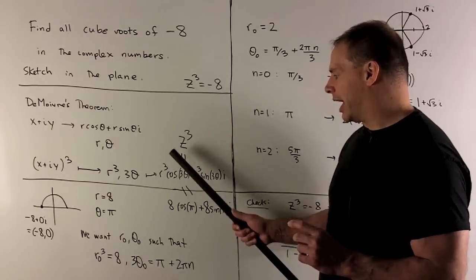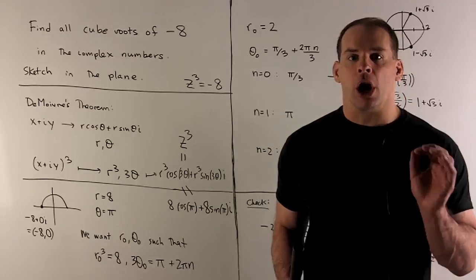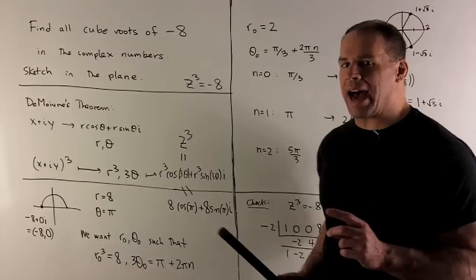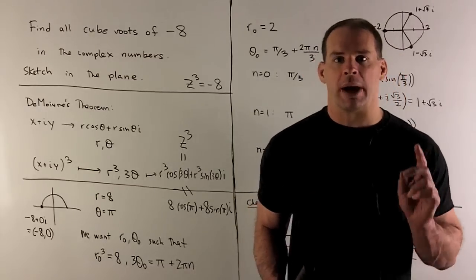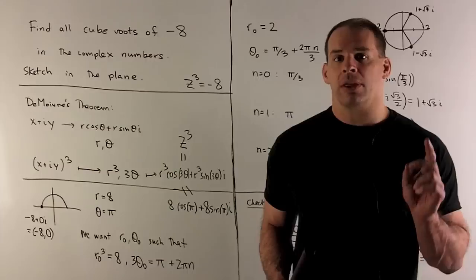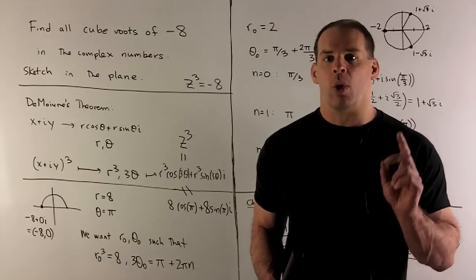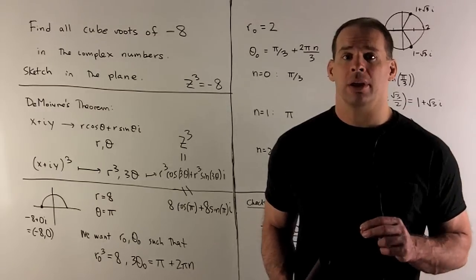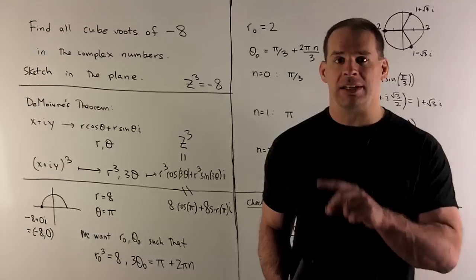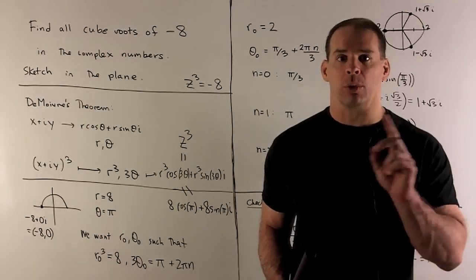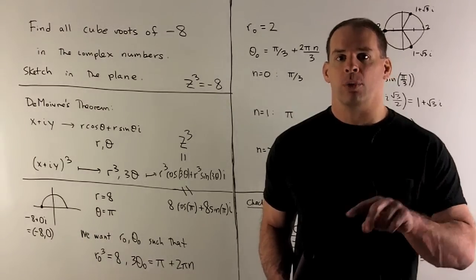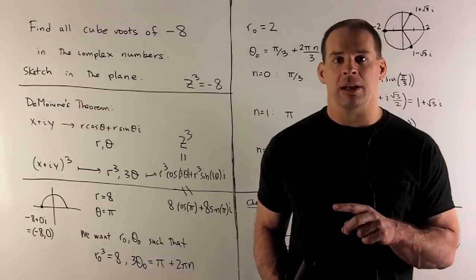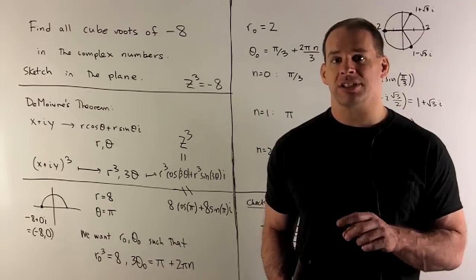We set z cubed equal to minus 8, which is 8 cosine pi plus 8 sine pi times i, and match like items. That gives r cubed equals 8, and 3 theta equals pi plus multiples of 2 pi. Note: if I just use 3 theta equals pi, I get only one solution — pi thirds — and miss the other two. So we add multiples of 2 pi so that when I divide by 3, we catch all solutions. Once we find 3 distinct ones, we're done.